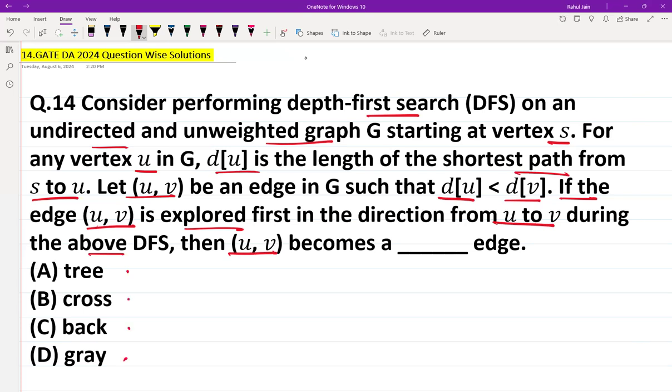So basically, it could be any graph G in which from the starting node S, one vertex is U and another vertex is V. d[U] is the shortest path length from S to U, and d[V] is the path length from S to V. The condition here is